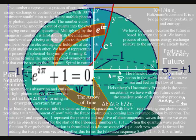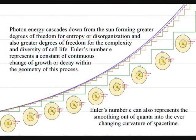Within such a reference frame, the number E represents a constant of continuous change, of either growth or decay. Also, the number E represents the smoothing out of quanta into the ever-changing curvature of space-time.